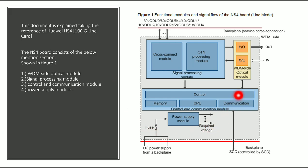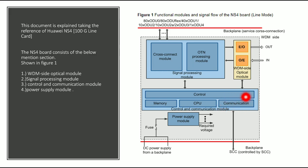Here is the OTN line card. We are taking the reference of Huawei NS4, also called the service processing board. The NS4 board consists of the following sections: the WDM side optical module, the signal processing module, the control and communication module, and the power supply module. The control and communication module communicates with the SCC in the backplane, and the cross connect card or signal processing module communicates with the backplane to get the different electrical signals.